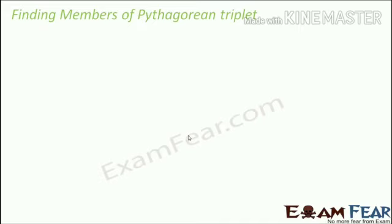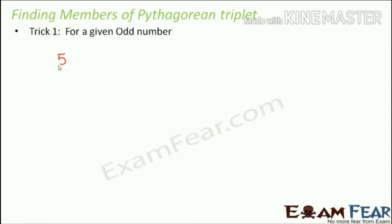Now suppose one member of the Pythagorean triplet is given and you are asked to find the remaining two members. For example, if I give you 5 and ask you to make a Pythagorean triplet with 5 as one member, how would you find the other two? I'll give you a simple trick. There are two different tricks for odd and even numbers respectively. Trick number one is for a given odd number like 5, and it is a simple three-step process.